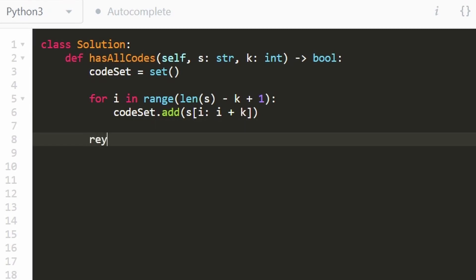So then after we've done that, we know we can return true if, and only if the length of this code set, the number of codes that we were able to add unique codes is exactly equal to 2 to the power of K. This is how you can do that in Python by this operator. But if this is the case, we can return true. If it's not the case, then we return false. So let's run it to make sure that it works.